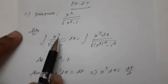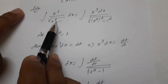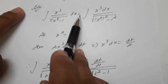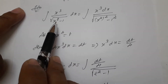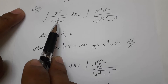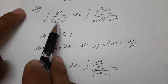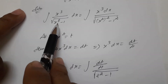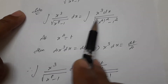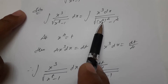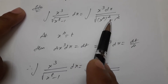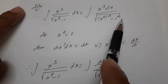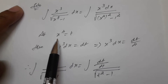Integration of x cube divided by square root of x power 8 minus 1 into dx. We recognize the form square root of x square minus a square. Since we have x power 8, we can write it as x power 4 whole square, so square root of x power 4 whole square minus 1 square.